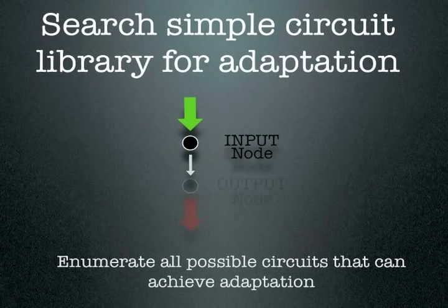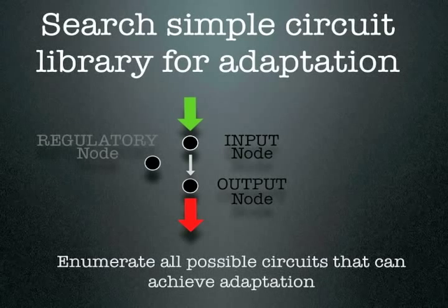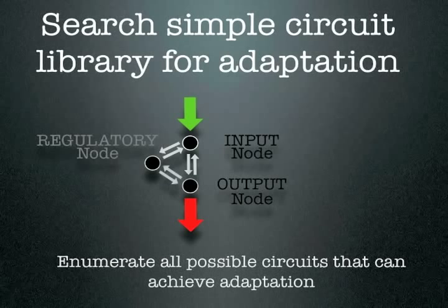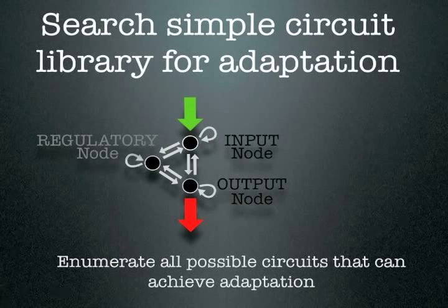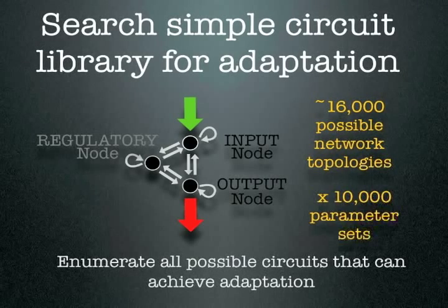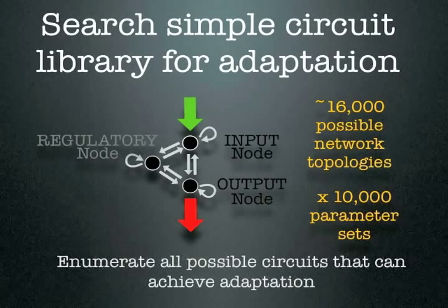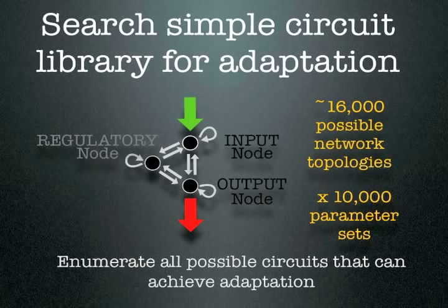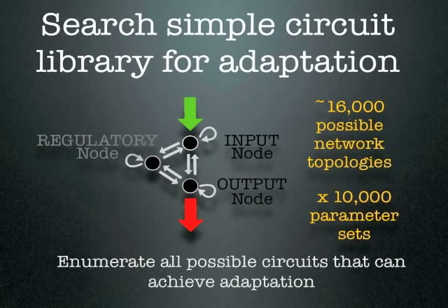We start with an input node that can receive signals, an output node that can transmit outputs, and we also include a third regulatory node. All three nodes can have positive or negative relationships with one another, as well as positive or negative self-regulatory loops. This yields a total of 16,000 possible three-node network topologies. For each of these network architectures, we sample their behavior with 10,000 different parameter sets.